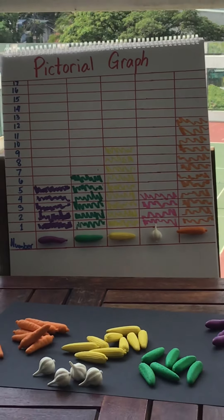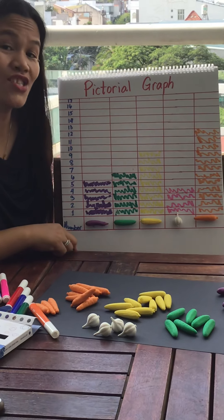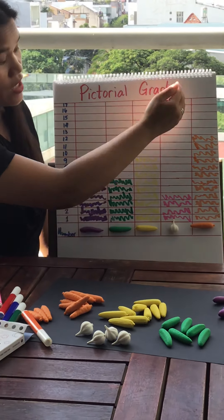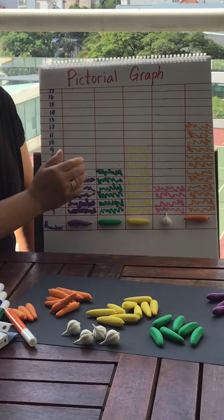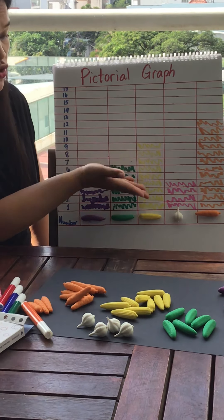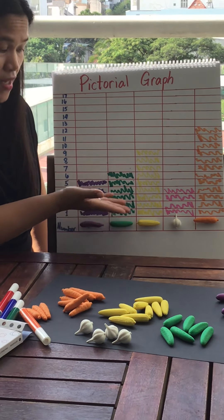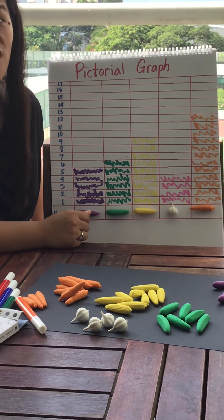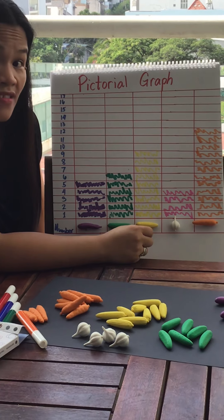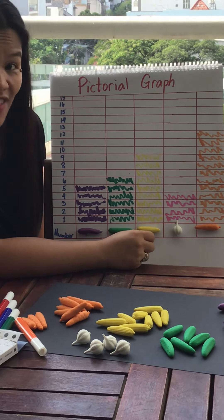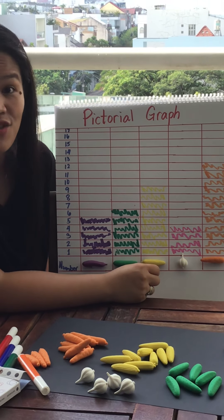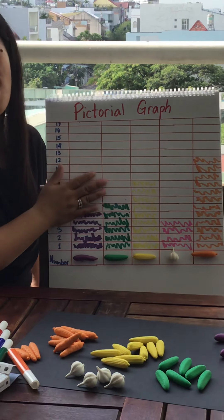So now I made a pictorial graph of my vegetables. Now I can see right away which one has the most number of vegetables I have and which one is the least number of vegetables that I have here. That is helping to gather the data of the things that you wanted to count and that is called graph.